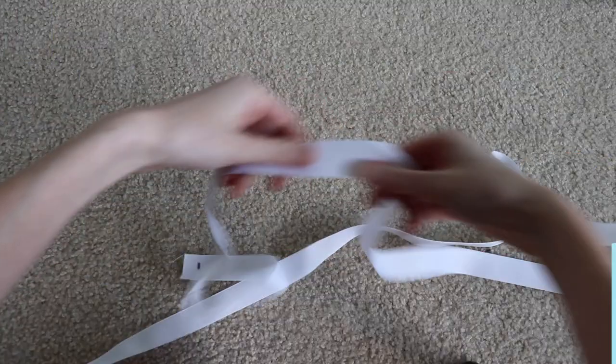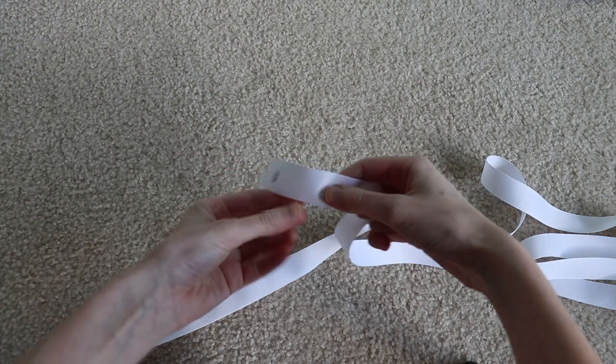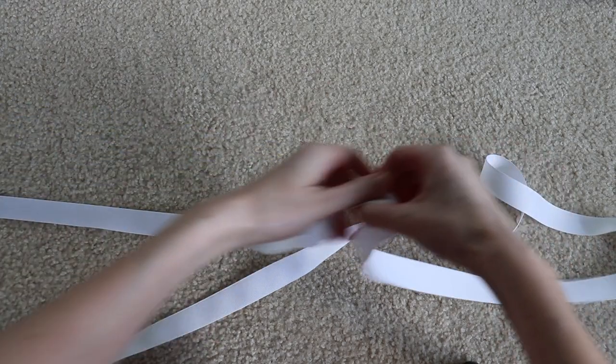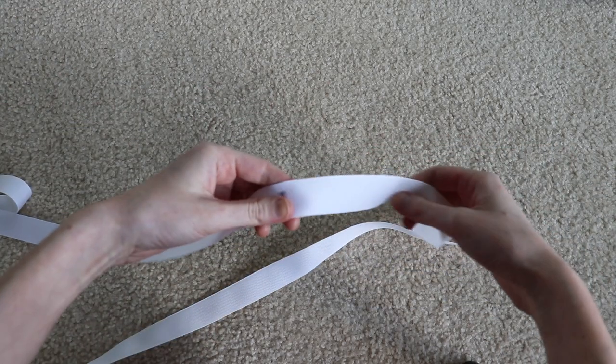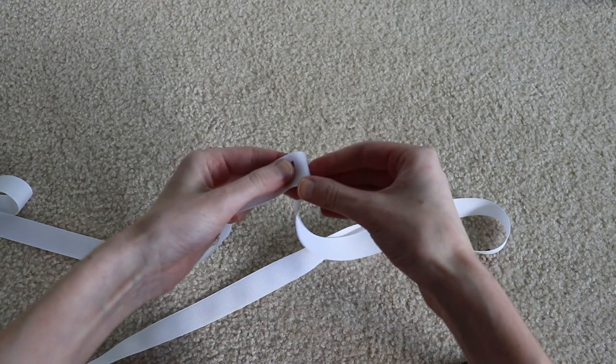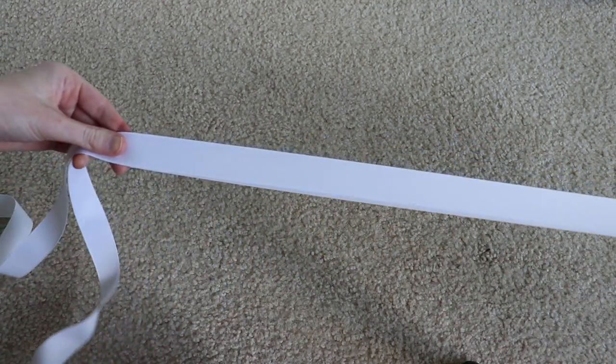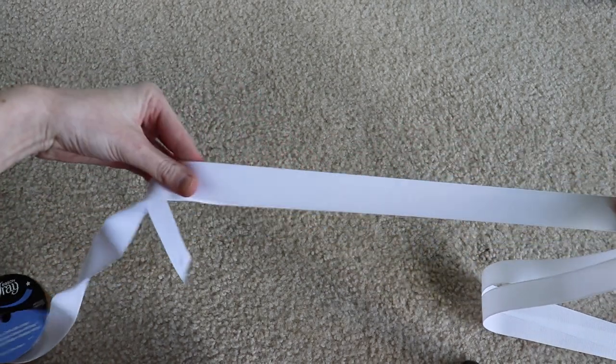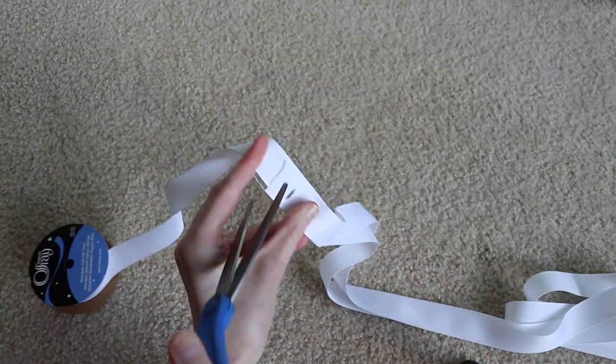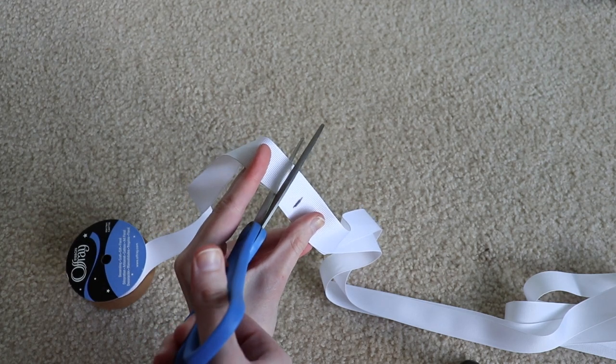Now it's time to cut our ribbon. So here's the one end where I've marked it and left a little bit beyond, and then here's the other end where I marked it. So I'm going to come a little bit beyond my mark and I'm going to fold my ribbon in half and then I'm going to line up the other ends and then I'll cut my ribbon with a pair of scissors.